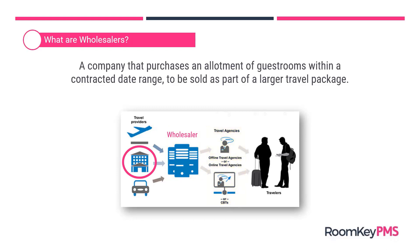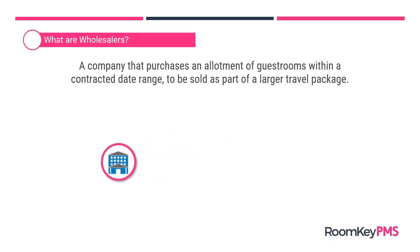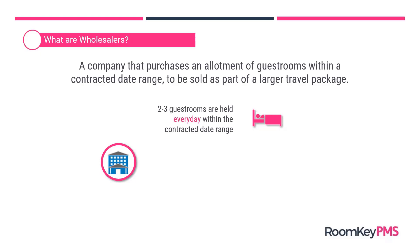While we're thinking about this definition as it relates to the hotel, there are some stipulations whenever we're qualifying a wholesaler account. From the hotel's perspective, the main thing they'll notice is that two to three guest rooms are held every day within the contracted date range — these are the allotments. That's an example; it could be higher, but those rooms are held every day within that date range.